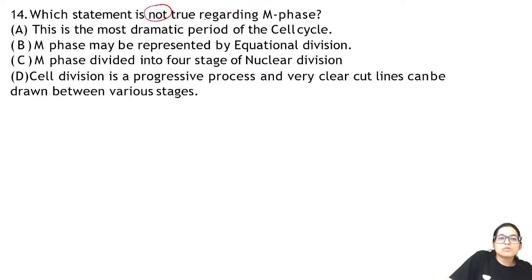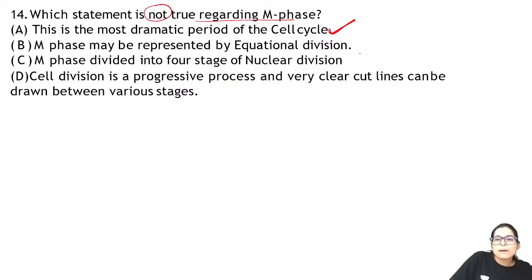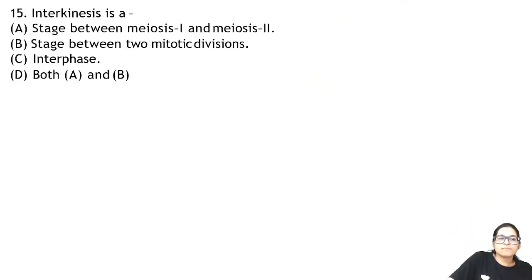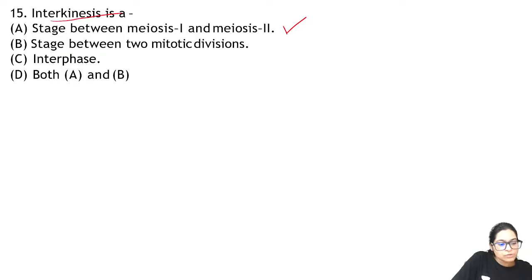Question 14: which statement is not true regarding M phase? M phase is the most dramatic phase. Equational division — that is correct. A clear-cut line can never be drawn — no clear cut line. Interkinesis is the stage between meiosis 1 and meiosis 2. So the wrong statement is about drawing a clear cut line.